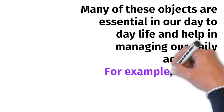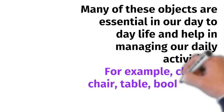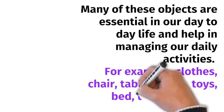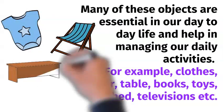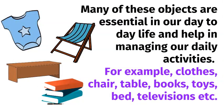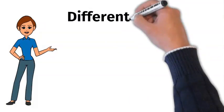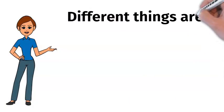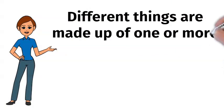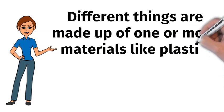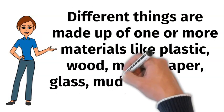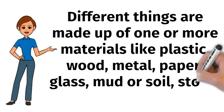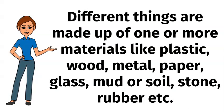For example, clothes, chair, table, books, toys, bed, televisions, etc. Different things are made up of one or more materials like plastic, wood, metal, paper, glass, mud or soil, stone, rubber, etc.